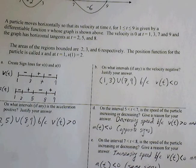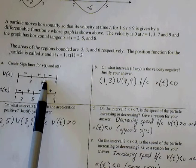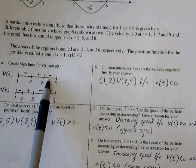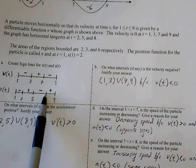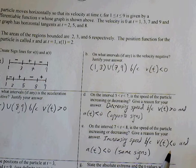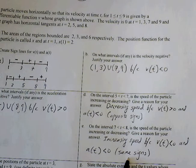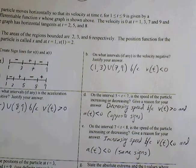On the interval between 7 and 8, is the speed of the particle increasing or decreasing? Between 7 and 8, velocity is negative. We have increasing speed because velocity is negative, acceleration is negative. Whenever you have same signs between velocity and acceleration, you'll have increasing speed.